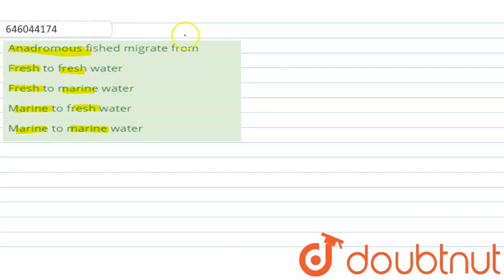Fresh to fresh water - the fishes that migrate from fresh to fresh water are called Potamodromus fishes. So this option will be incorrect here.